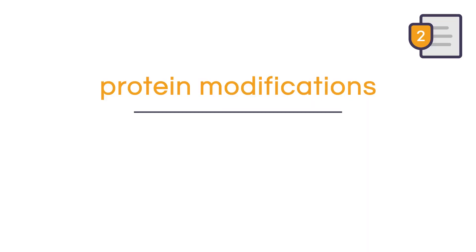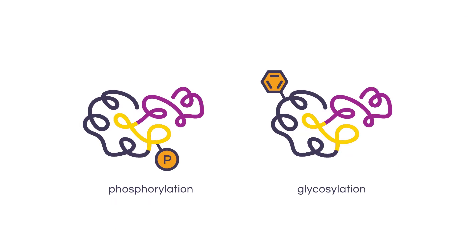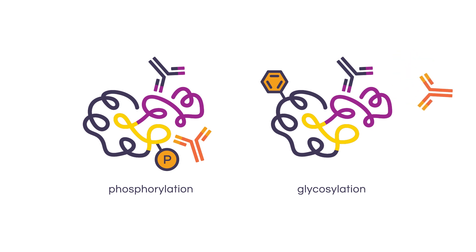Second, we want to think about protein modification. A lot of proteins undergo chemical and post-translational modifications, such as phosphorylation and glycosylation. If that's the case for your protein, make sure you know which one of those modifications you want to study and that your primary antibody can target that. For example, if you want to study phosphorylation, perhaps the best approach is to use two antibodies: a pan-antibody that recognizes all modifications of that protein, and one specific antibody that recognizes only the phosphorylated form of your protein.